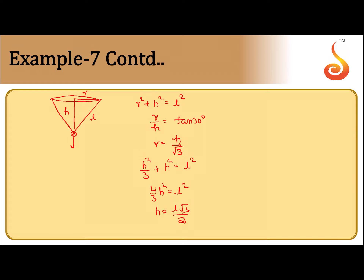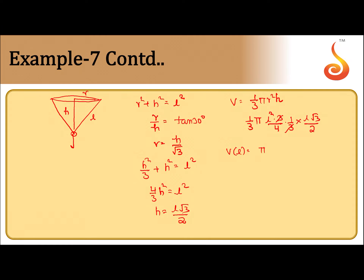The volume of a cone is (1/3)πr²h. We express everything in terms of l. Since h = l√3/2 and r = h/√3, we get r² = h²/3. Substituting: volume = (1/3)π·(h²/3)·h = (1/3)π·h³/3. With h = l√3/2, after simplification — 3s cancel, 2s give 8 — we get V = π·l³·√3/24.